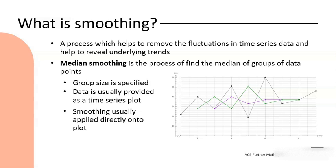In the example here we've got the black original time series graph, and next to that we've got a green three-median smooth data, and the purple finally is a five-median smooth data. With median smoothing we are grouping a certain number of data points and finding the median of that group, and we'll go through some examples of that in the following section.